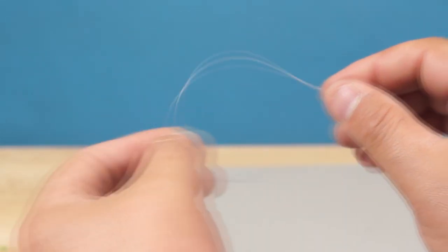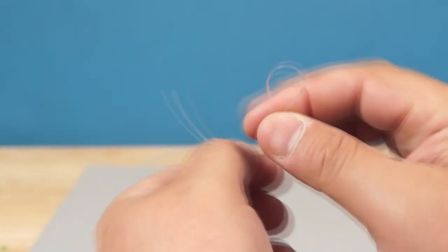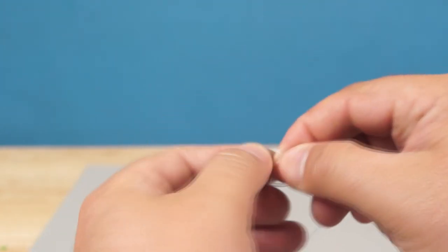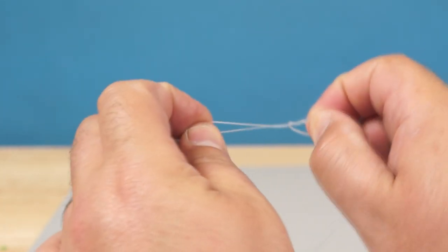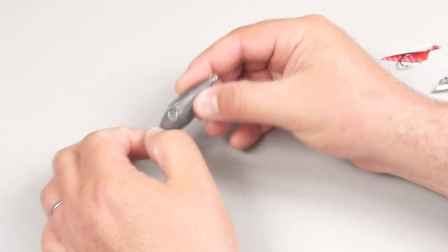For the bottom of the rig I'm going to tie a simple double overhand loop knot at about 18 inches below the bottom branch. This will form the connection to the weight by looping in rather than tying directly.